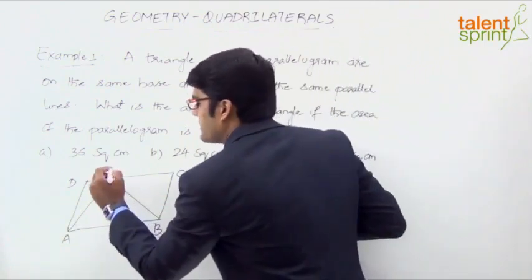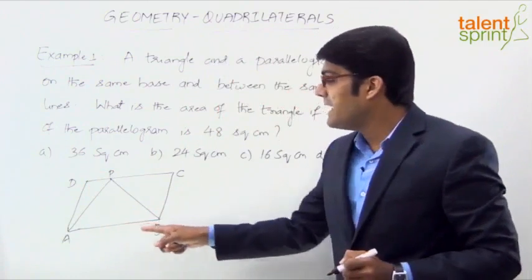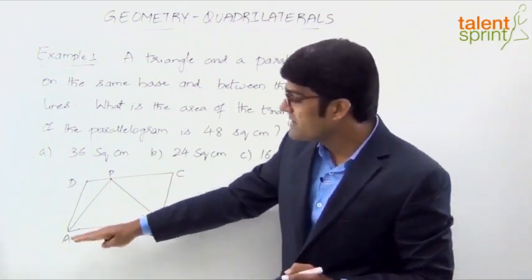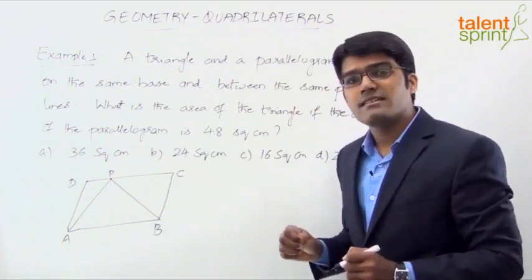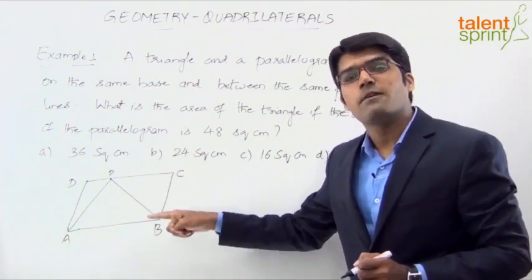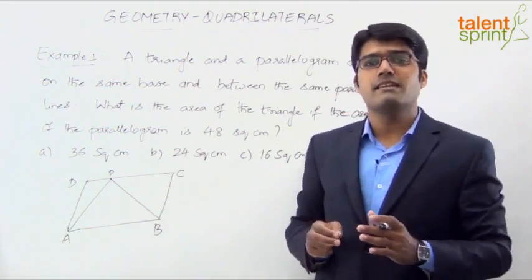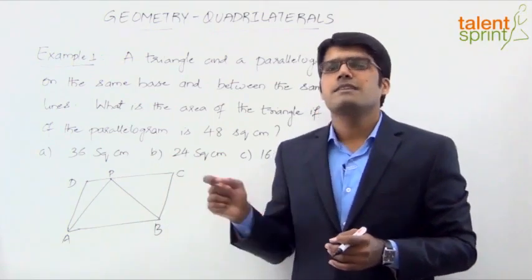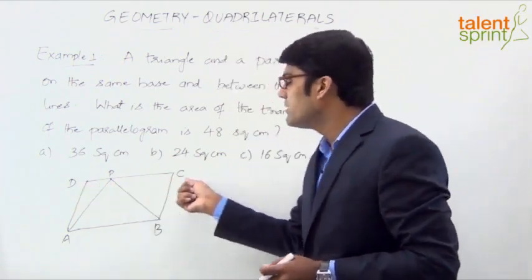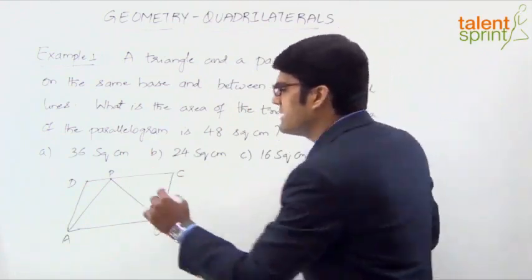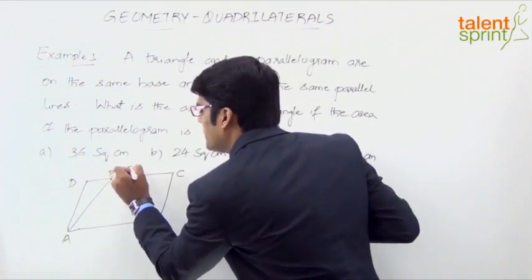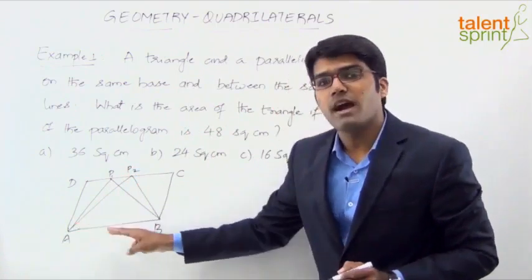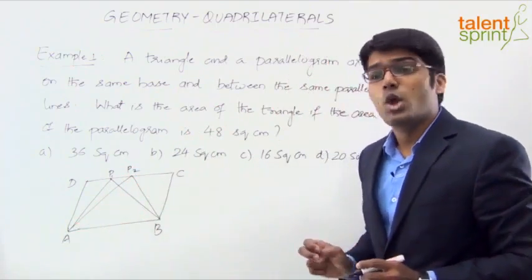Let's say this point is P, so the triangle ABP and the parallelogram ABCD are between the same two parallel lines with the same base AB. In such a case, the area of the triangle will be half of the area of the parallelogram. It can be any point on the parallel side — let's say point P1, or another point P2. The triangle AP2B will also have area equal to half of the area of parallelogram ABCD.